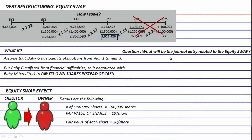The entry related to equity swap starts with debit loans payable of 1,923,426 to cancel it. If the company is using the discount on liability account, you need to debit loans payable at the undiscounted amount, which in our illustrative problem is 2 million, and then credit the discount balance.